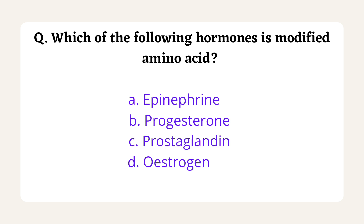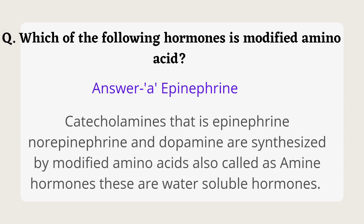The next question is: which of the following hormones is a modified amino acid? Options are epinephrine, progesterone, prostaglandin, and estrogen. This question was asked in HBSSE Stiffness Exam 2016. The other name for modified amino acid hormones is amine hormones. Chemically, hormones are classified into two types: water-soluble hormones and lipid-soluble hormones. Amine hormones are a type of water-soluble hormone, and examples include epinephrine, norepinephrine, and dopamine.